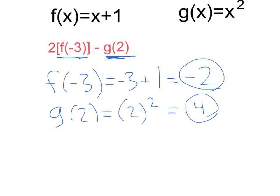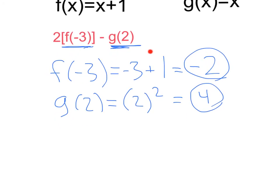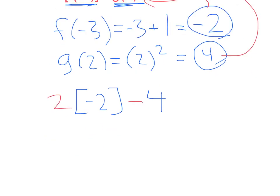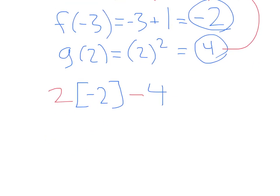Now what we want to do is we can go ahead and take these values, f of negative 3. That's going to substitute all the way into the f of negative 3 here. That'll be 2 times, instead of f of negative 3, negative 2. And then we could do minus our g function, which is g of 2 is 4. We plug that into our g of 2 there, minus 4, giving us an overall value of 2 times negative 2. That's negative 4 minus 4, which will be negative 8.